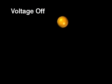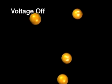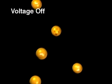When there is no voltage applied, the fall of the droplets is determined by their mass and the viscosity of air through which they fall.